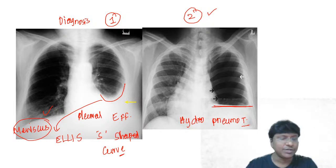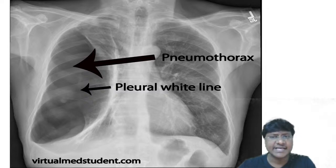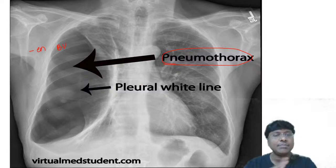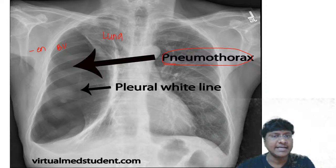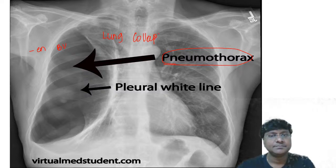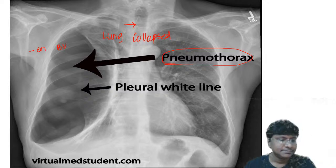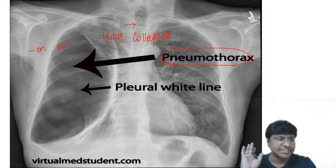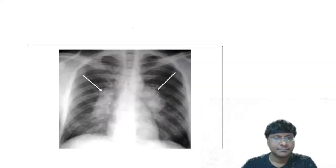In the pneumothorax X-ray you will see: absence of bronchovascular markings, collapsed lung, and trachea shifted to the opposite side.